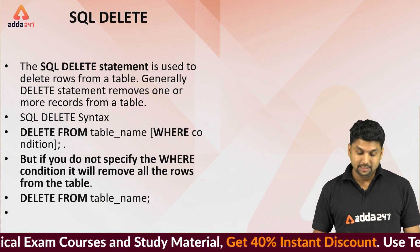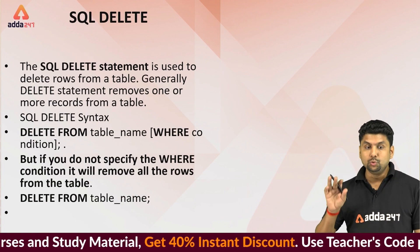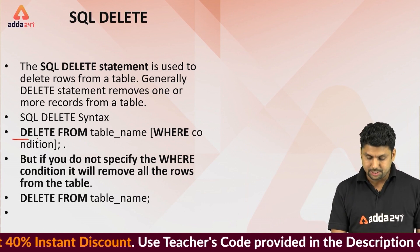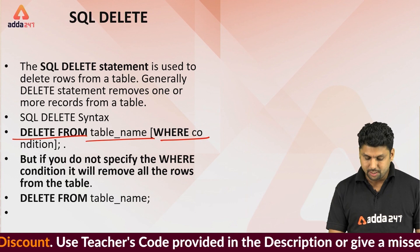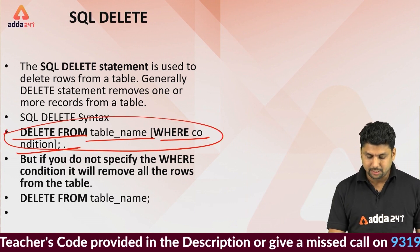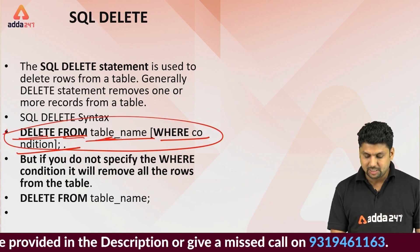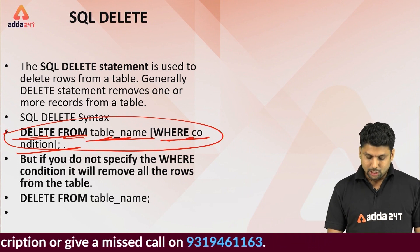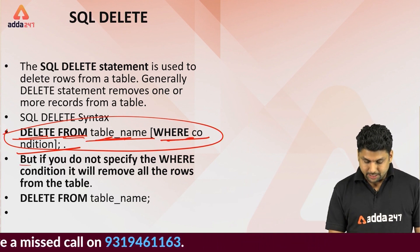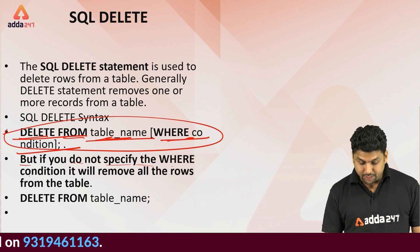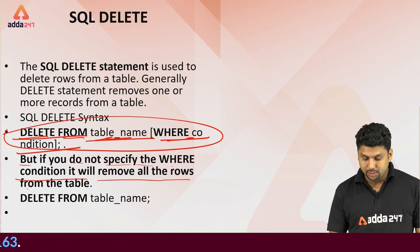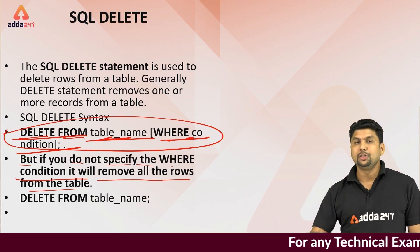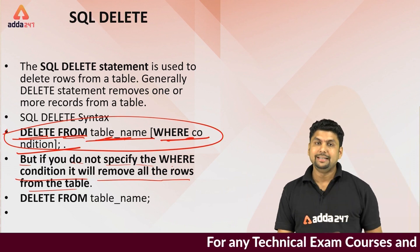SQL DELETE is used to delete a row from a table. The syntax is: DELETE FROM table WHERE condition. This syntax will delete the row where the specified name or condition is met. If you don't specify the WHERE condition, it will remove all rows.